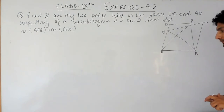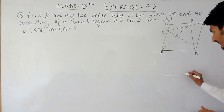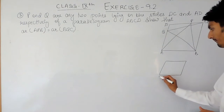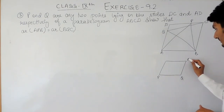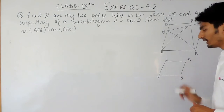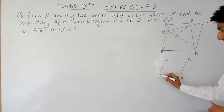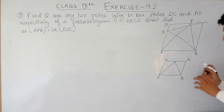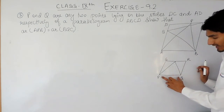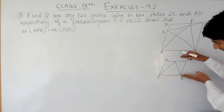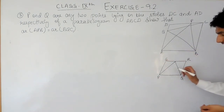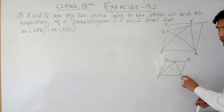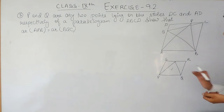To solve this we must apply a theorem which says: if a triangle and a parallelogram lie on the same base and they are between the same parallels, then the area of the triangle must be half of the area of the parallelogram. We are going to apply that same theorem here.